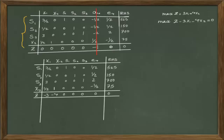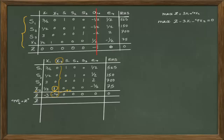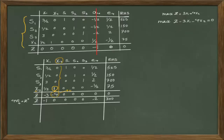In the row of z, a basic variable again has a nonzero coefficient — we see negative 4 — so we must eliminate it using an elementary row operation. Multiplying the 4th row of this table by 4 and adding it to the row of z generates that 0. Remember, in phase 2 we are now solving the actual original objective function, which is a maximization problem. For a maximization problem, the optimality condition is when all values in the row of z are positive or zero.